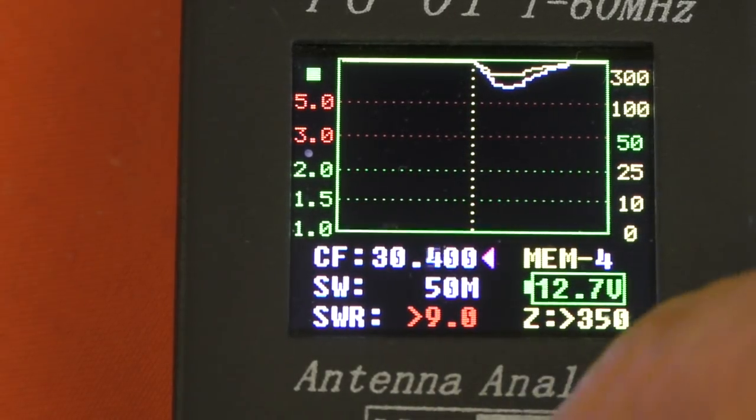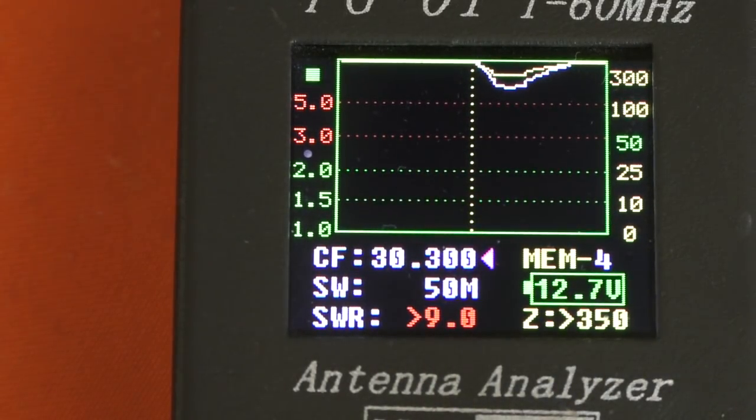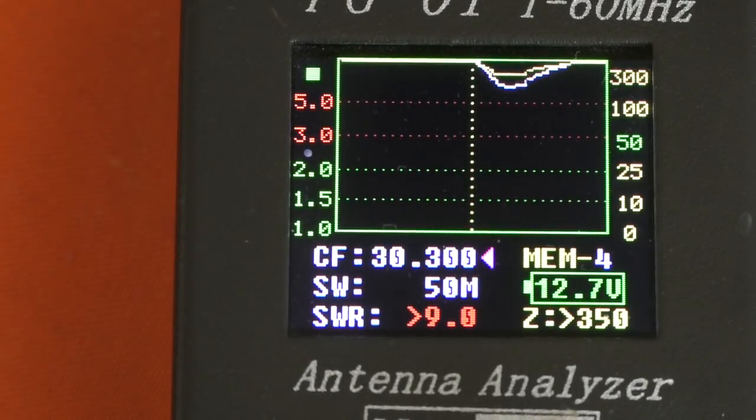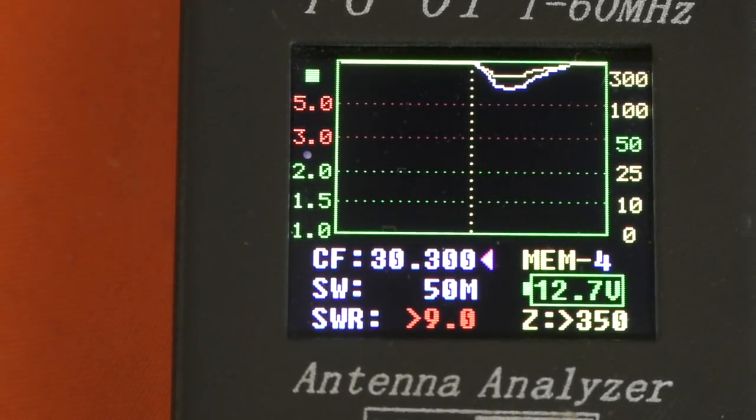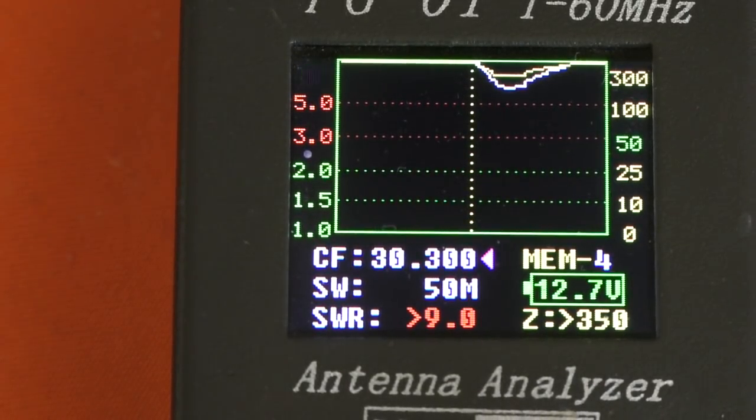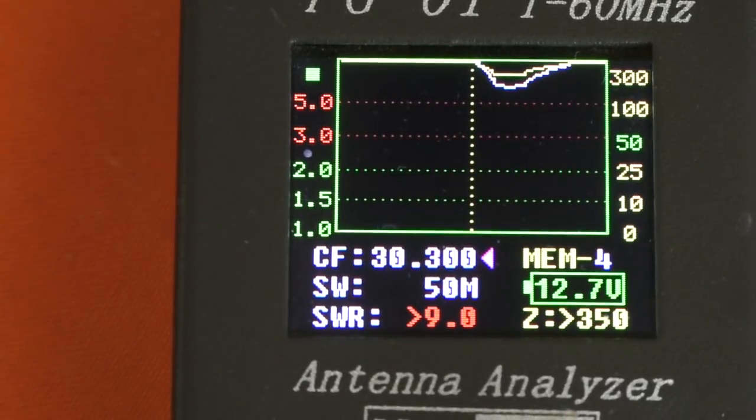So that is well out of my area of interest. I can strap that choke across the output of the amplifier and know that it's not going to interfere with the performance on any of the bands I'm interested in.